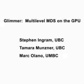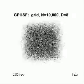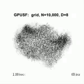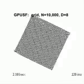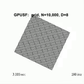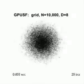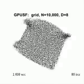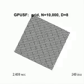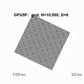Glimmer is a new multi-level algorithm for MDS, multidimensional scaling. Glimmer and its force-based subsystem GPUSF are very fast because they exploit GPU parallelism in all aspects of the computation.